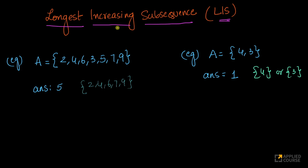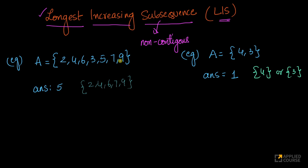Let's first understand what the longest increasing subsequence is with a couple of examples, then we'll go ahead and solve it. So imagine I have an array. What we want to find is the length of a subsequence. When I say subsequence, it means non-contiguous — we want to find a bunch of elements that are strictly increasing, and the length of that non-contiguous subsequence should be the longest.